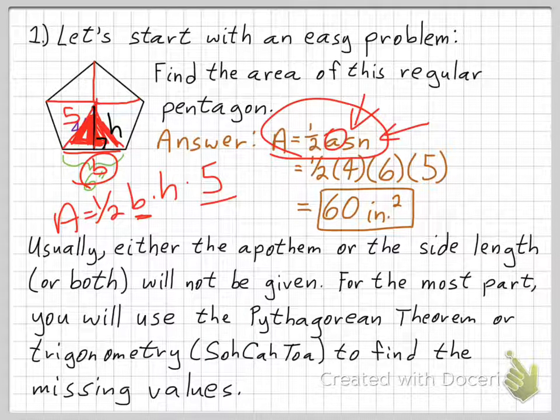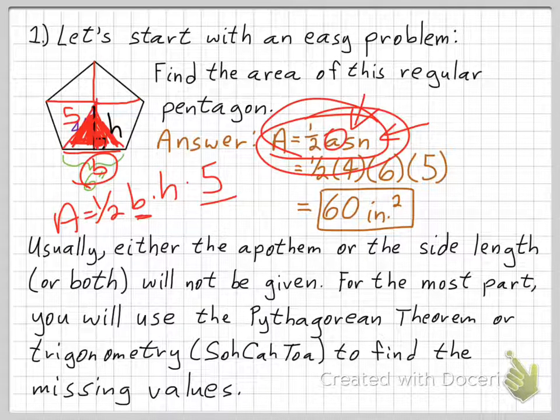You can use one-half ASN, and where it comes from is taking the area of one triangle and multiplying by the number of triangles in the figure. It's the same thing — you come up with the same answer. That gives you a little appreciation of where the formula one-half ASN comes from.